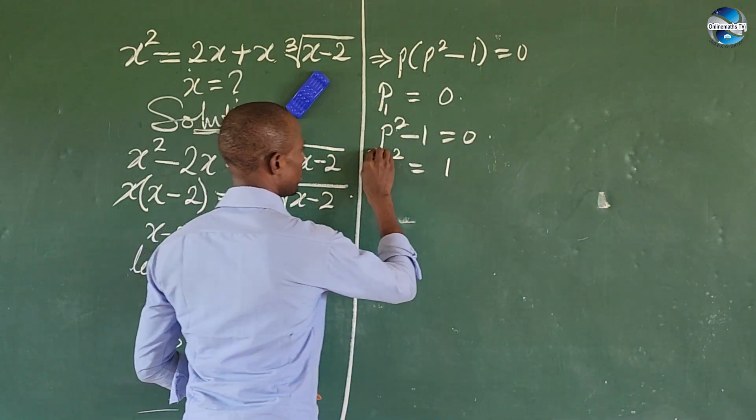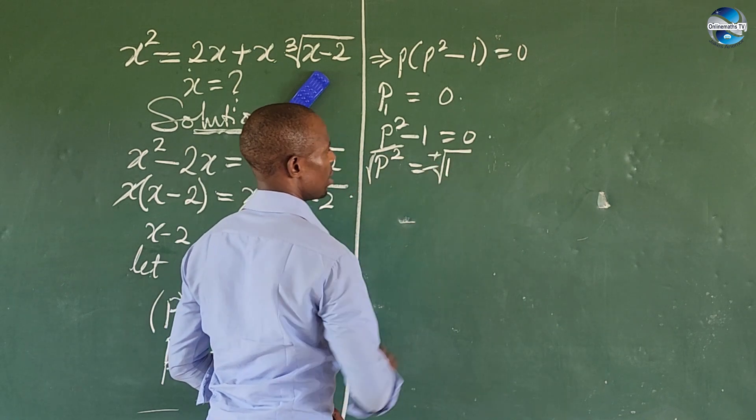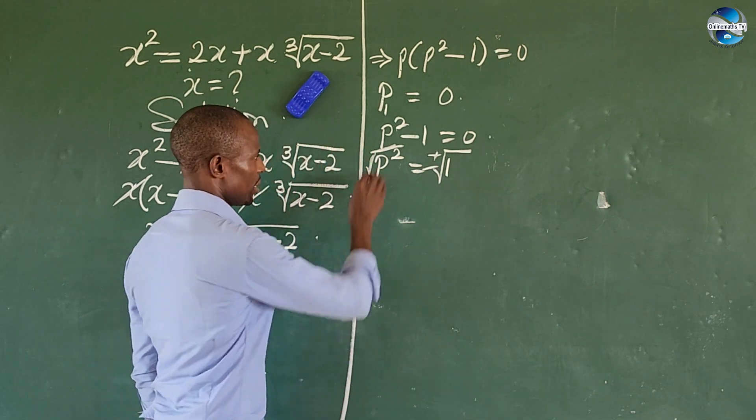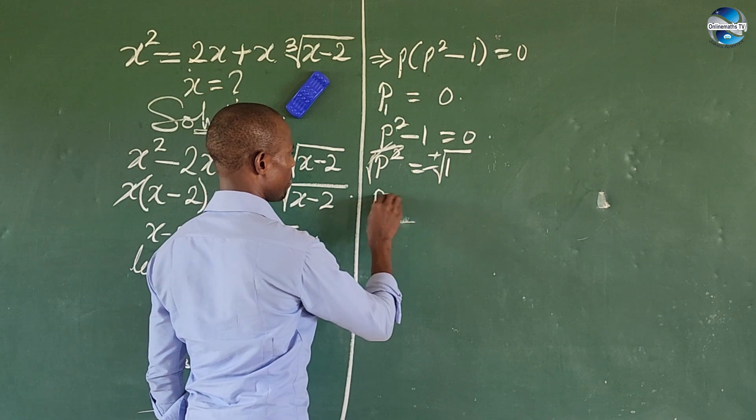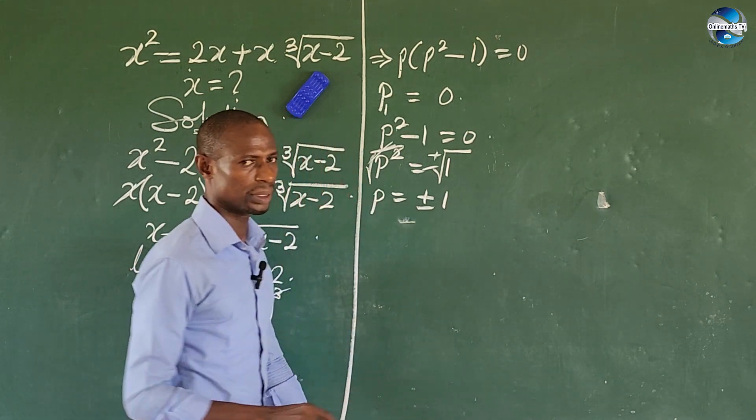What we do here is simple: we take the square root of both. Immediately you do that, plus minus comes in. These leave the system, so we have p equals plus minus 1, so we have our p₂ and p₃.